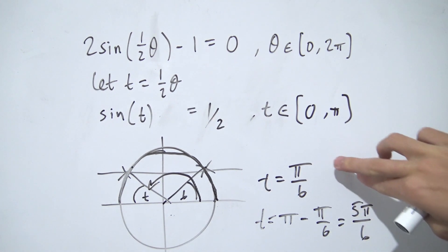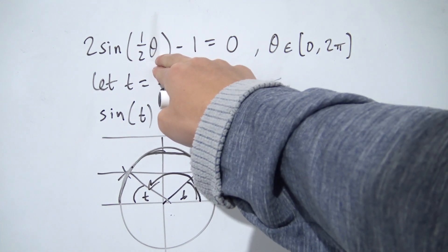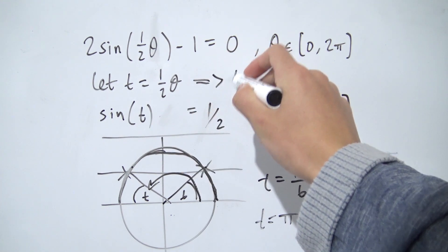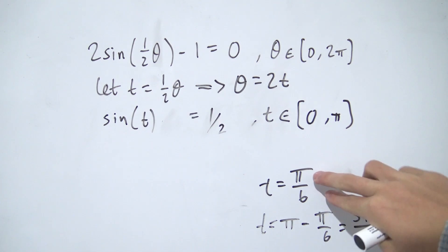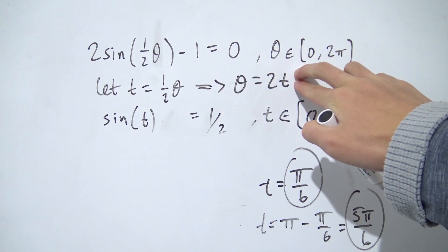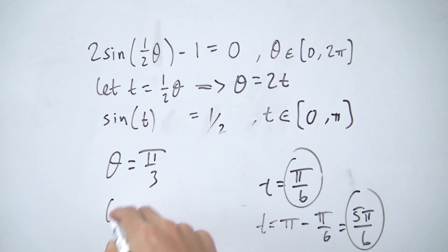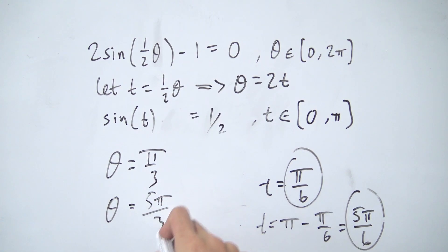We now have two solutions for t: π/6 and 5π/6. But these are solutions for t, and we want solutions for our original variable theta. Since t = (1/2)θ, rearranging gives θ = 2t. Plugging in π/6: θ = 2·(π/6) = π/3. Plugging in 5π/6: θ = 2·(5π/6) = 5π/3. So our two solutions for theta are π/3 and 5π/3.